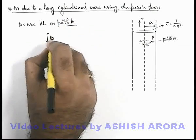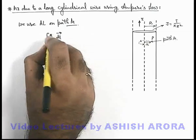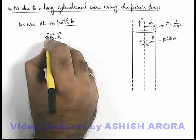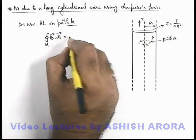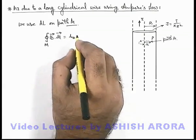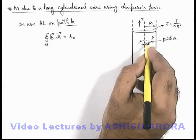Then we can say the line integral of magnetic induction along this closed path M must be equal to μ₀ multiplied by the enclosed current within the closed path.